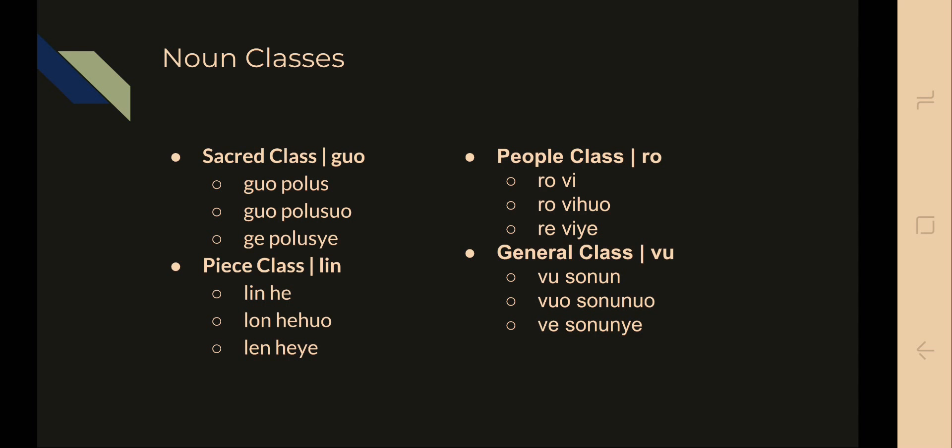Noun classes are kind of cool in the language. There is the sacred class, marked by 'guo', like 'guapolus', which means 'the language' — anything considered sacred by the culture goes into this class. There's also the piece class, marked by 'li', like 'li e', meaning 'the hand' — anything considered a part of something else goes here. There's the people class, marked by 'ro', like 'rovi', meaning 'the person' — anything seen as sentient. And the general class, marked by 'vo', like 'vo sonu', meaning 'the night' — anything not in the other classes.